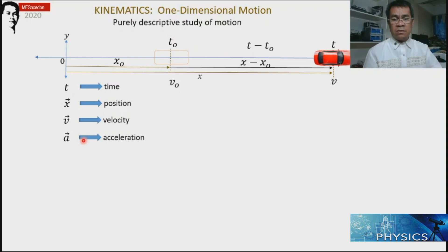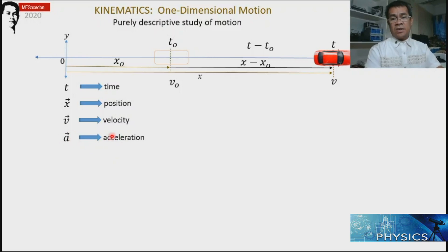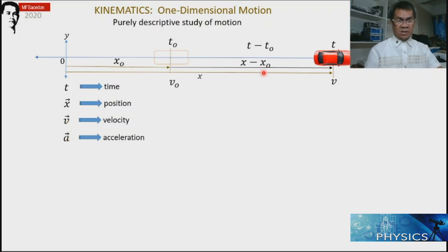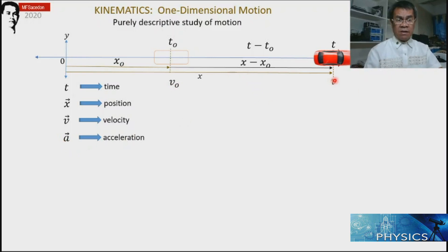Another way to describe motion is to use the physical quantity acceleration. Acceleration is the change in velocity per time interval. If we divide the change in velocity — final velocity minus initial velocity — by the time interval, the result is average acceleration. So average velocity is the change in position by time interval, while average acceleration is the change in velocity divided by the time interval.